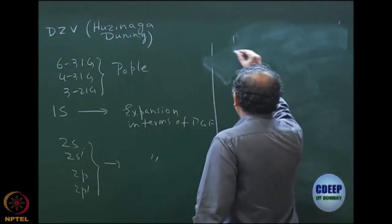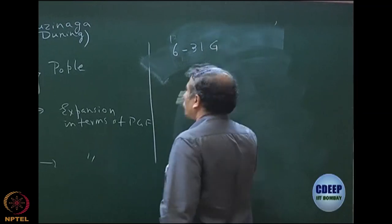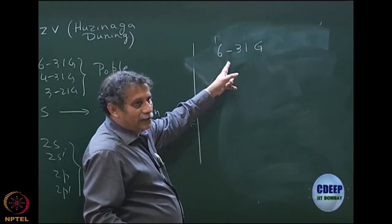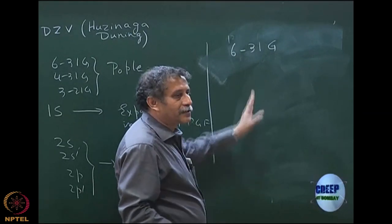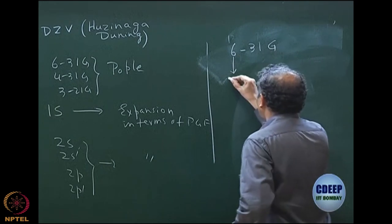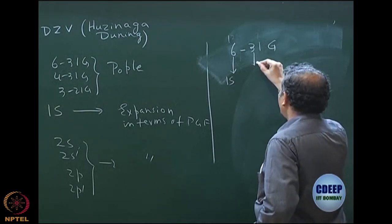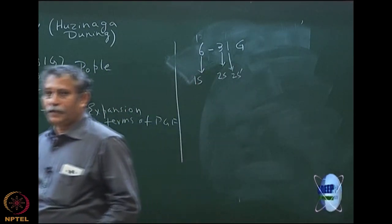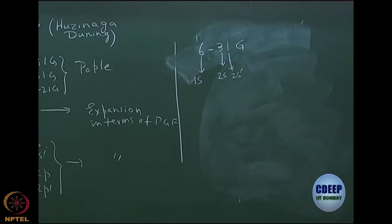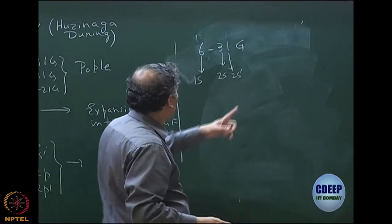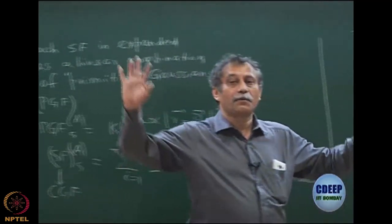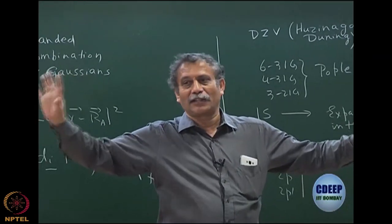Let me now explain 6-31G, which is a very common basis set. The dash is very important — it separates core from valence. The 6 is the number of primitive Gaussians used to expand 1s. The 3 is the number of primitives to expand 2s, and the 1 is uncontracted for 2s prime. So 6-31G: 6 primitives for core 1s, then 3 and 1 for the valence.